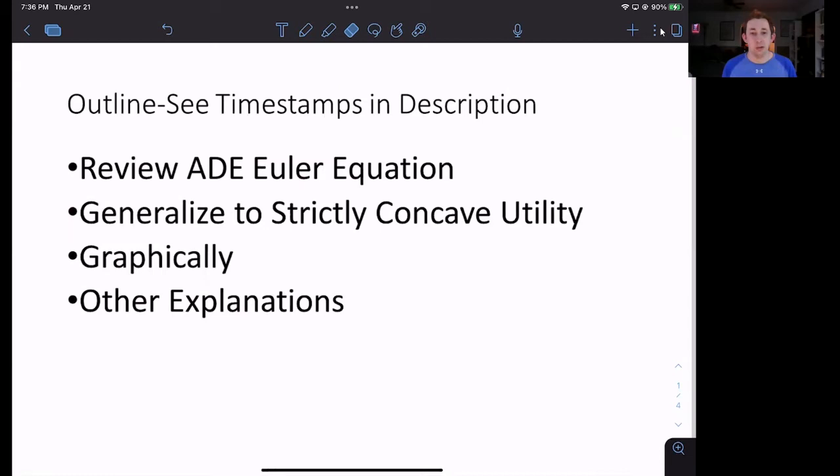So we are going to quickly review the Arrow-DeBrew-Euler equation, which is where we got that consumption smoothing from. Then we are going to generalize it, and we are going to show how perfect consumption smoothing works graphically and why it makes sense. Then at the end, I'll give a few other explanations. So timestamps are below.